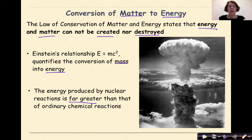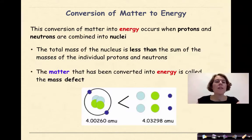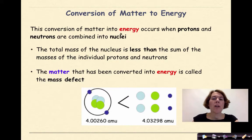The energy produced by nuclear reactions is far greater than that of ordinary chemical reactions, as we can see in this particular graphic of a nuclear explosion. This conversion of matter into energy occurs when protons and neutrons are combined into nuclei.